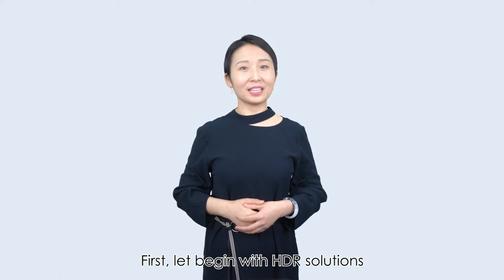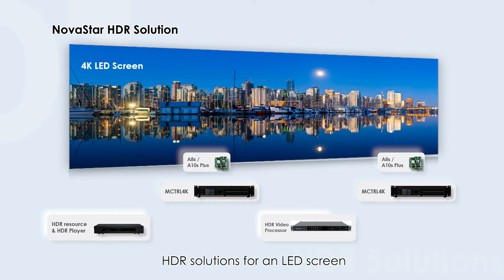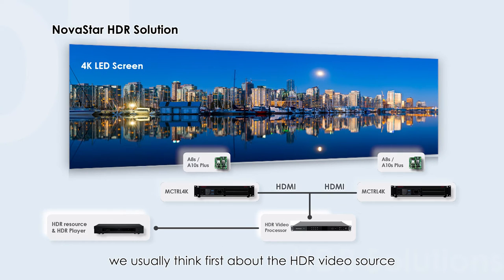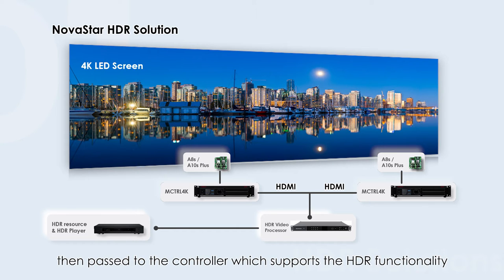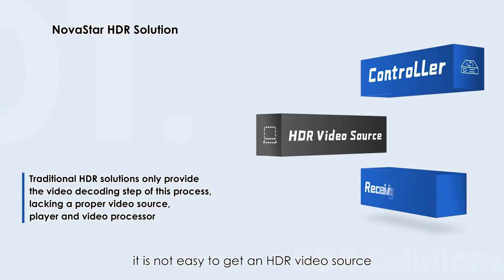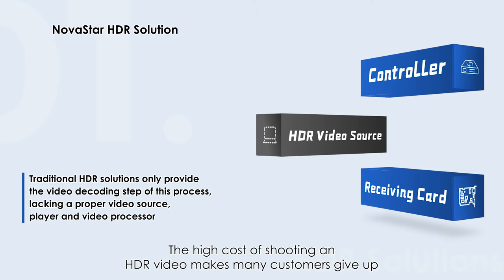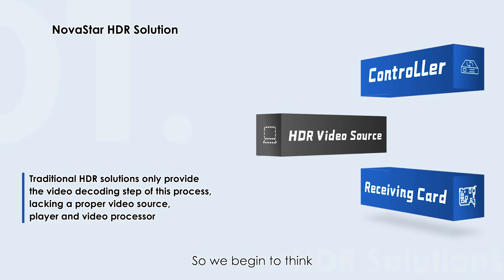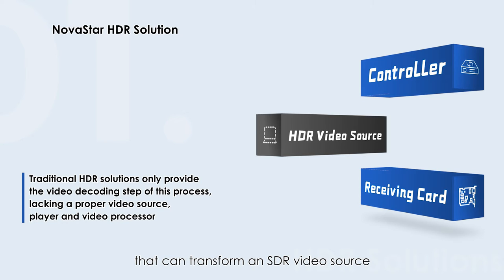First, let's begin with HDR solutions. When we think about HDR solutions for an LED screen, we usually think first about the HDR video source. The signal is transmitted to the HDR video processor, then passed to the controller, which supports the HDR functionality. However, this solution has a problem. It is not easy to get an HDR video source. The high cost of shooting an HDR video makes many customers give up. So, we began to think how great it would be if there was a device that can transform an SDR video source into an HDR video source to solve the problem.